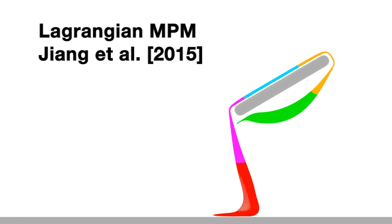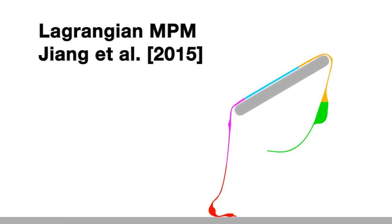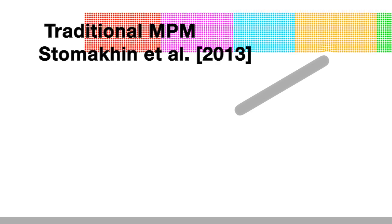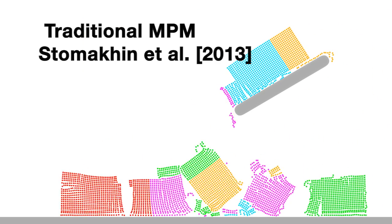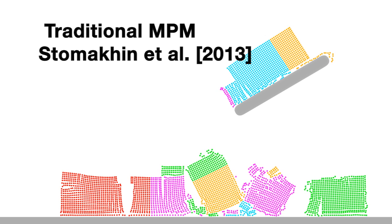If we use Lagrangian MPM, there's no self-collision response. Traditional MPM, however, handles self-collisions but introduces numerical fracture and plastic deformation.